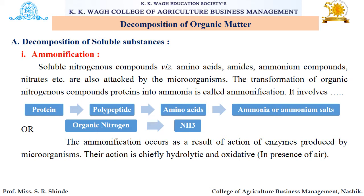Some soluble nitrogenous compounds like amino acids, amides, ammonium compounds, and nitrates are attacked by different microorganisms. When there is a transformation of organic nitrogenous compounds like proteins into ammonia, that process is ammonification. Proteins are converted into polypeptides, which are further converted into amino acids, and finally these amino acids are converted into ammonia or ammonium salts — organic nitrogen converted into ammonia. This ammonification occurs as a result of action of different enzymes produced by microorganisms, and this action is chiefly hydrolytic and oxidative.